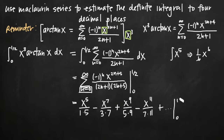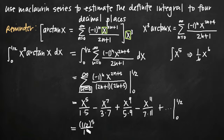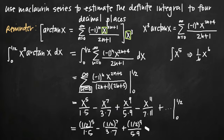We're evaluating this on the interval 0 to 1/2. We plug in the upper limit 1/2 first, then subtract what we get when we plug in the lower limit 0. Whenever we plug in 0, we get 0 for every term because we always have 0 to the 5th, 7th, 9th, 11th, etc. in the numerator — so plugging in 0 is unnecessary. We only need to plug in 1/2 into each term: 1/2 to the 5th divided by 1 times 5, minus 1/2 to the 7th divided by 3 times 7, plus 1/2 to the 9th divided by 5 times 9, minus 1/2 to the 11th divided by 7 times 11, and so on.